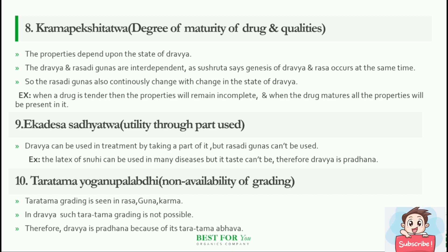Kramapekshi Tattva — degree of maturity of drug and qualities. The properties depend upon the state of Dravya; the Dravya and rasadi gunas are interdependent. As Shushruta says, genesis of Dravya and Rasa occurs at the same time, so the rasadi gunas also continuously change with the change in state of Dravya. For example, when a drug is tender, the properties will remain incomplete, and when the drug matures, all the properties will be present in it.